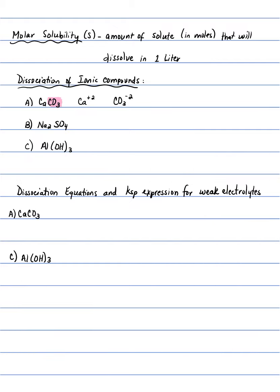When writing equilibrium constant expressions, we use concentrations of products over concentrations of reactants, all at equilibrium. For insoluble compounds in Ksp, those equilibrium concentrations are known as molar solubility — the amount of solute in moles that will dissolve in one liter of solution. It is still a molar concentration, but it's called molar solubility and we use the letter S for those concentrations.